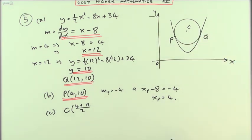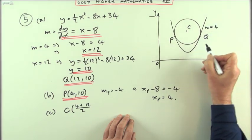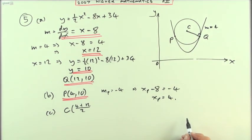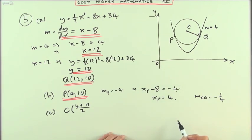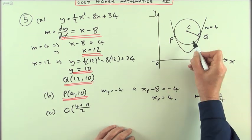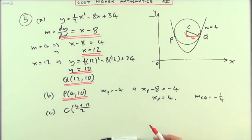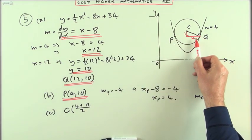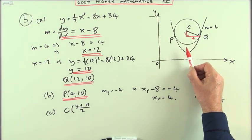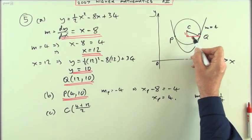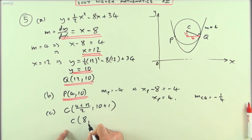Now how high up is C? The gradient of the tangent at Q is 4, so the gradient of the line joining C and Q must be negative one quarter — the perpendicular gradient. Negative one quarter means if you go 4 along, you go 1 down. Since Q is 4 units from C horizontally, C is 1 unit higher than Q. Q is at height 10, so C is at 10 plus 1, giving C as the point (8, 11).